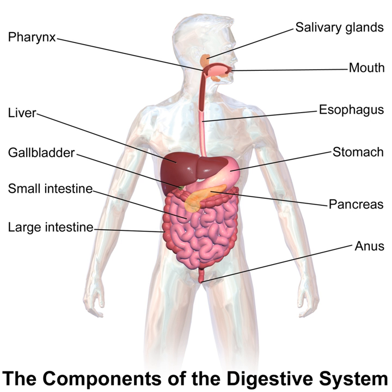An earthworm's digestive system consists of a mouth, pharynx, esophagus, crop, gizzard, and intestine. The mouth is surrounded by strong lips, which act like a hand to grab pieces of dead grass, leaves, and weeds, with bits of soil to help chew. The lips break the food down into smaller pieces. In the pharynx, the food is lubricated by mucous secretions for easier passage.